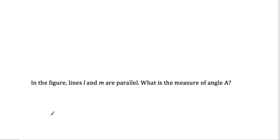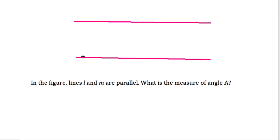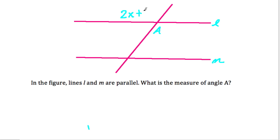Next, in the figure, lines L and M are parallel. We want to find the measure of angle A. This is a similar type of problem — two parallel lines cut by a transversal. The angle at line L is labeled 2x + 65 and the angle at line M is labeled 3x + 35.